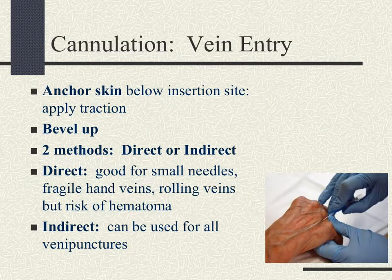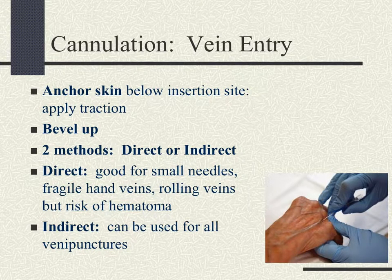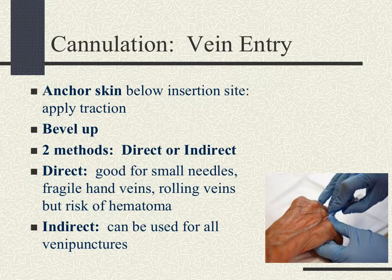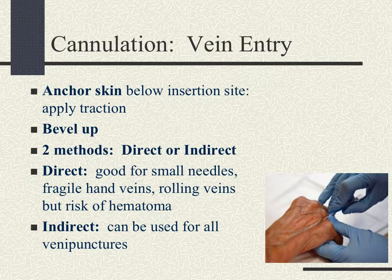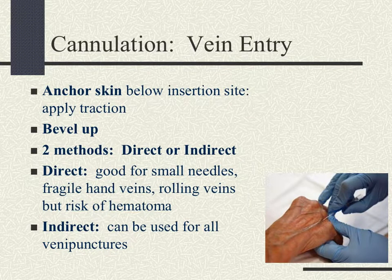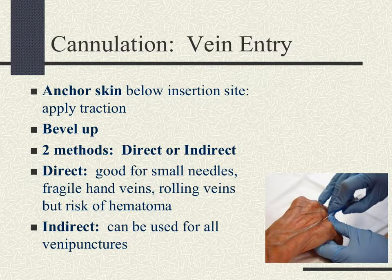Refer to pages 118 through 120 in your book. Anchor the skin below the insertion site and apply traction. As shown in the picture, traction is provided with the left hand while the cannula is in the right hand. Always insert the needle bevel up. There are two methods: direct — good for small needles, fragile hand veins, rolling veins, or when there's a risk for hematoma — and indirect, which can be used for all venipunctures.